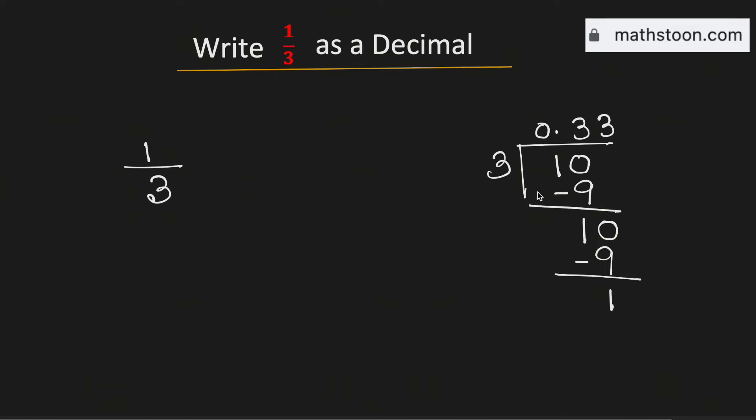So see that in this way we are getting 3. This means 1 over 3 as a decimal will be equal to 0.333 with 3 repeating.